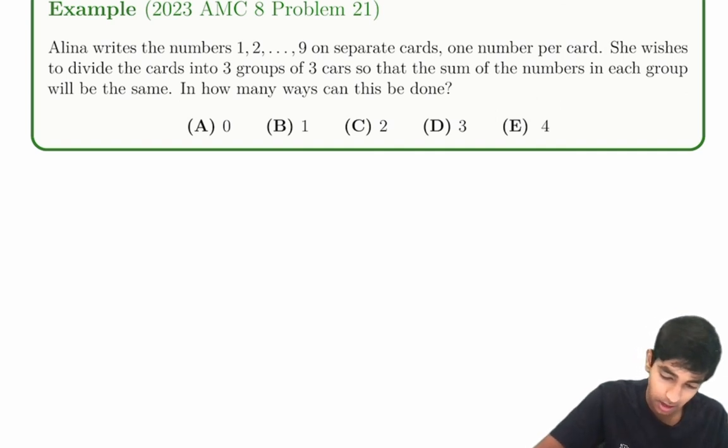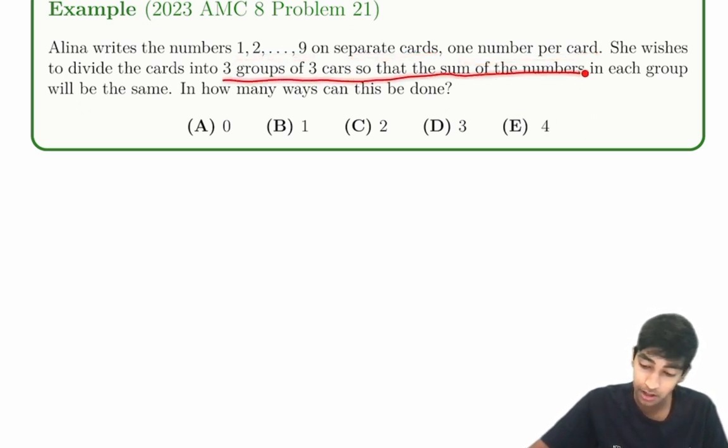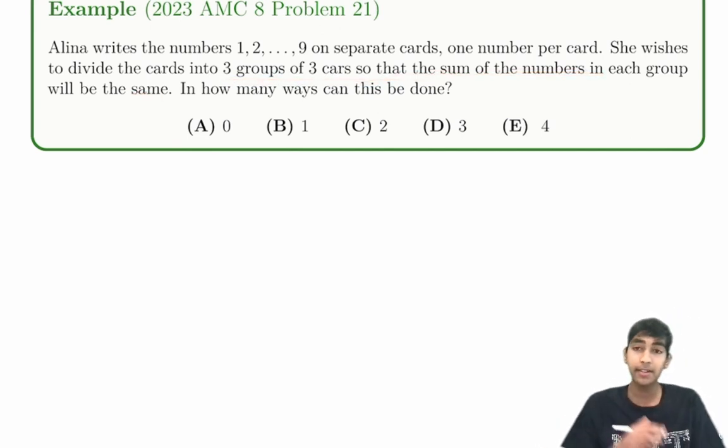So Alina writes the numbers 1 through 9 on separate cards, one number per card. She wishes to divide the cards into three groups of three cards so that the sum of numbers in each group is the same. In how many ways can this be done?